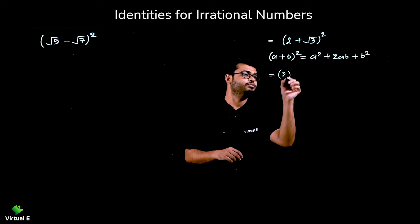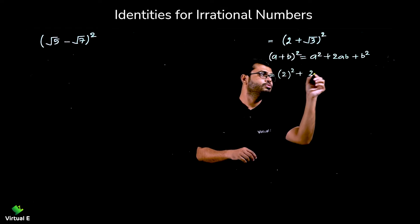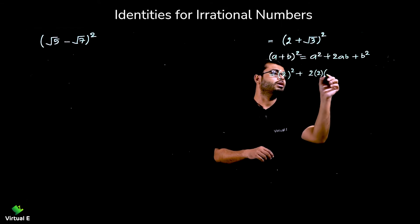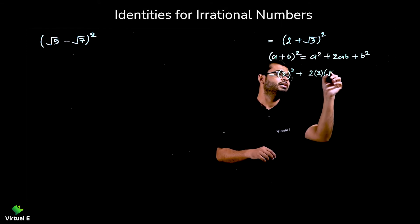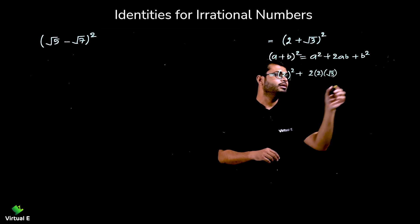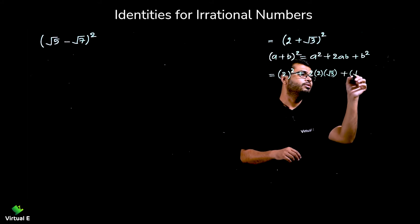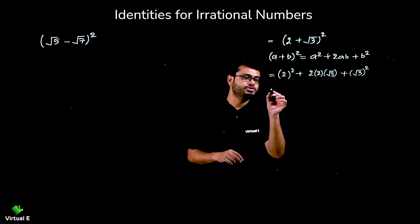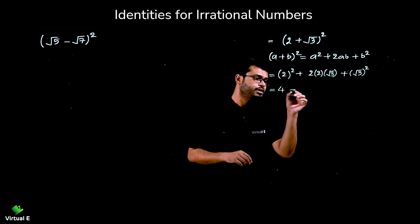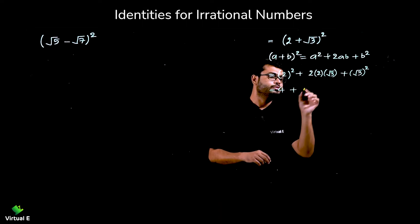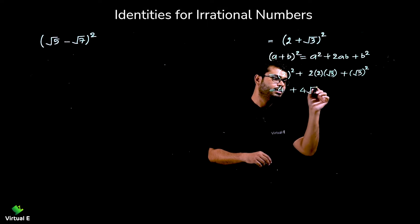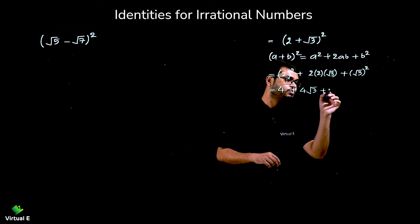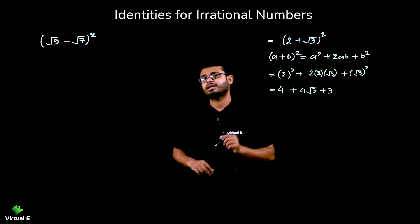We have here 2² + 2ab. So a is 2 and b is √3. That gives us 2² + 2·2·√3 + (√3)². Now 2² is 4, plus 2 into 2 that is 4, and √3 here. Plus (√3)² — do not write 9 here.